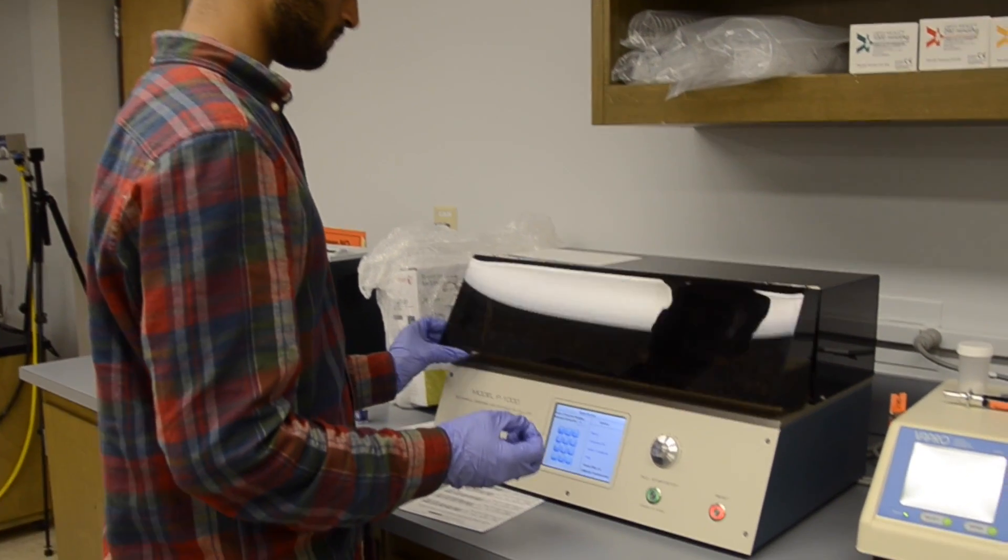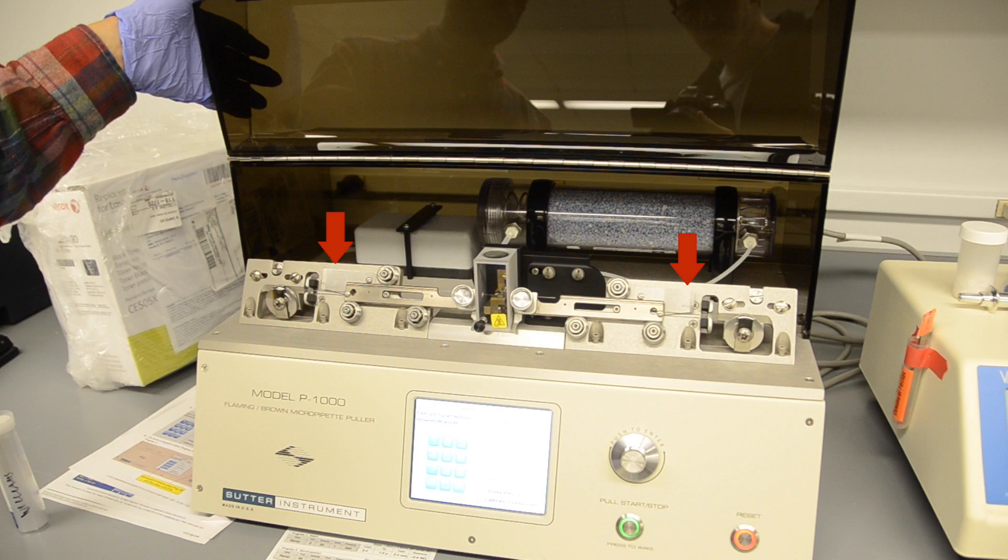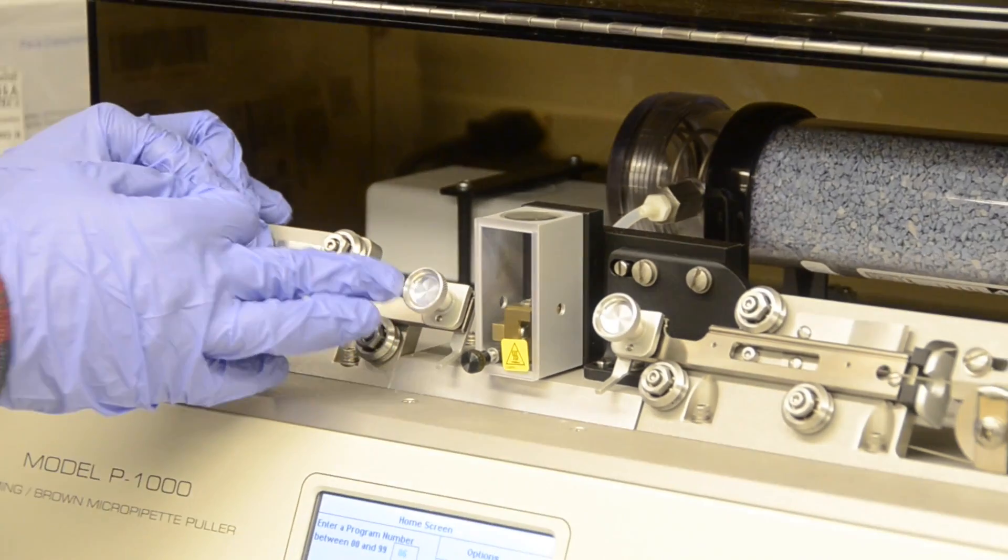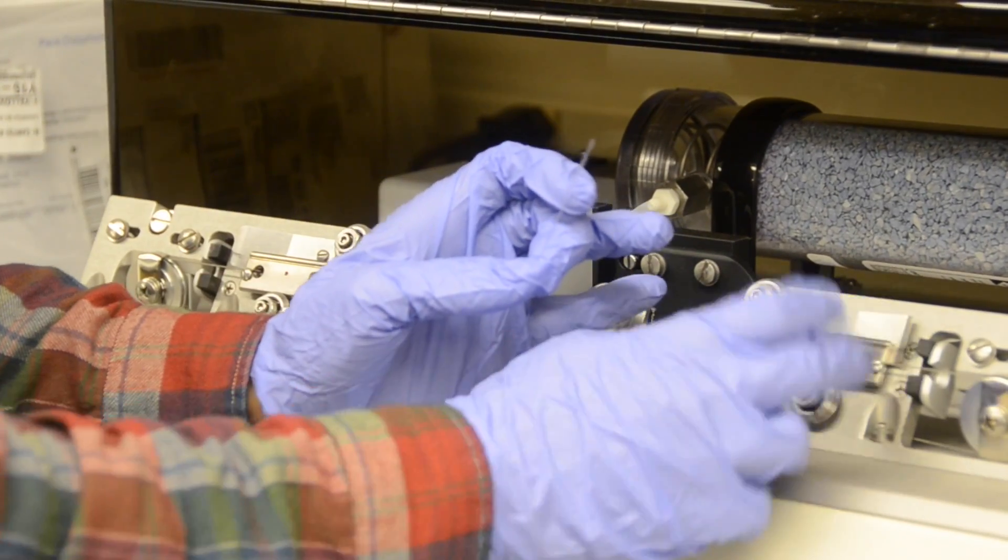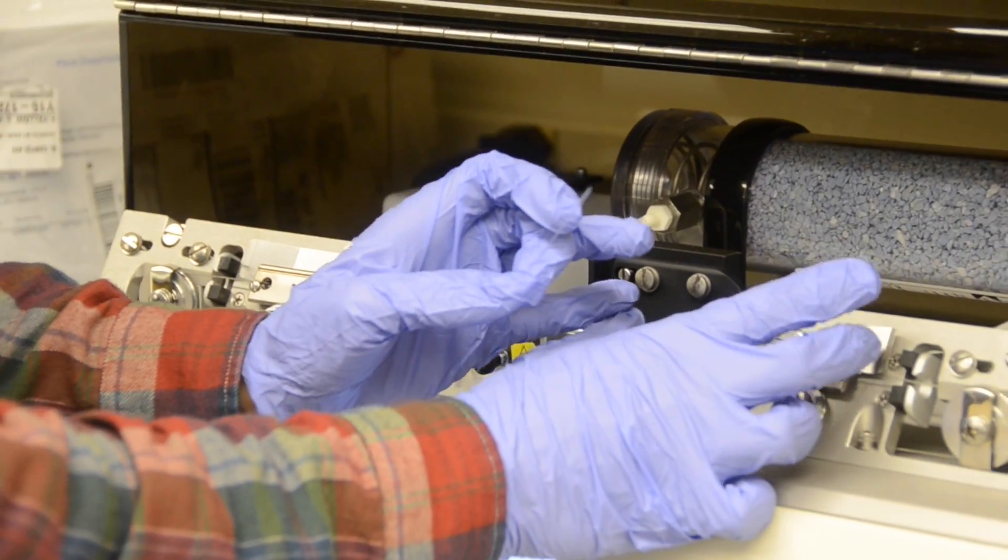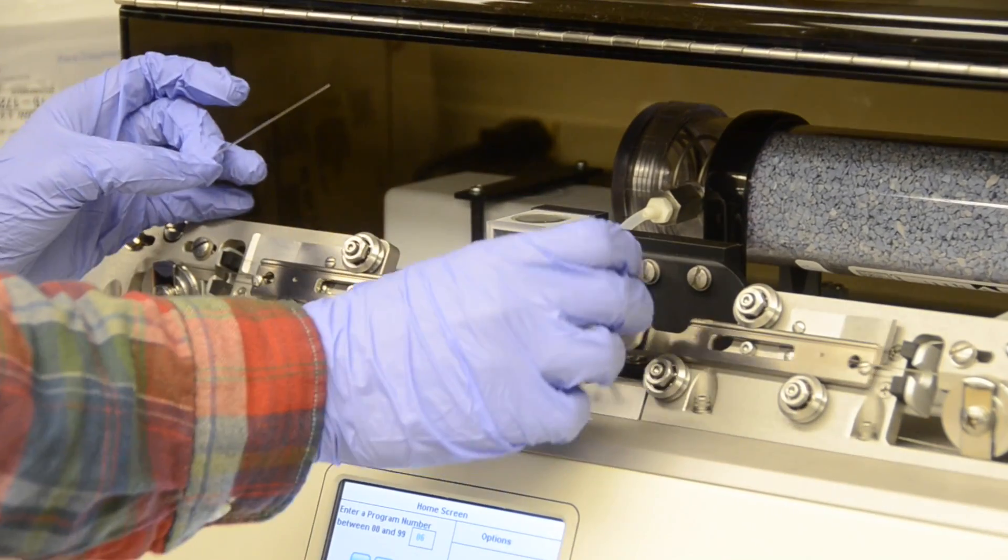Open the lid of the needle puller. Release the sliding capillary tube holders by pressing the latches. Make sure that the screws on the holders are loose.